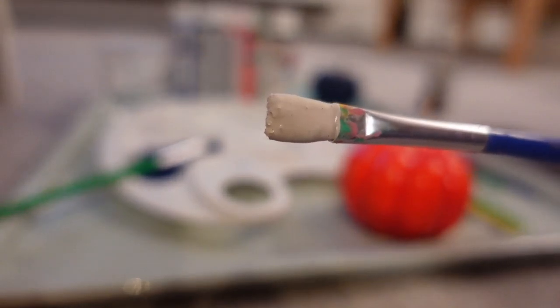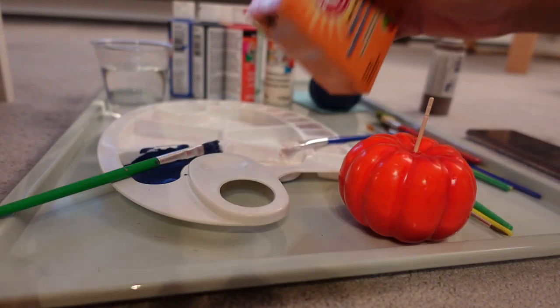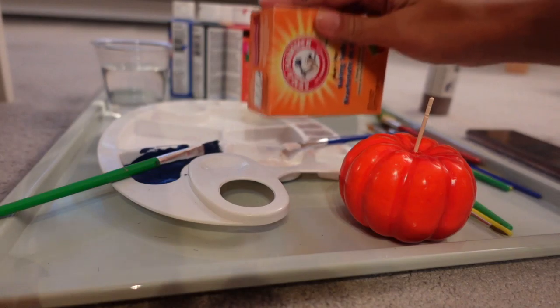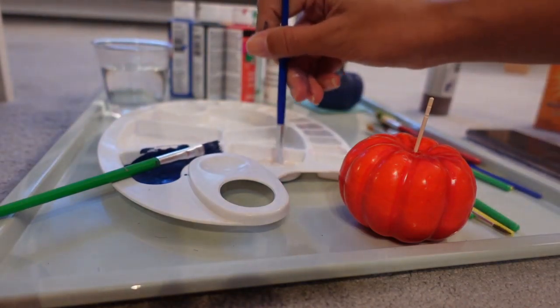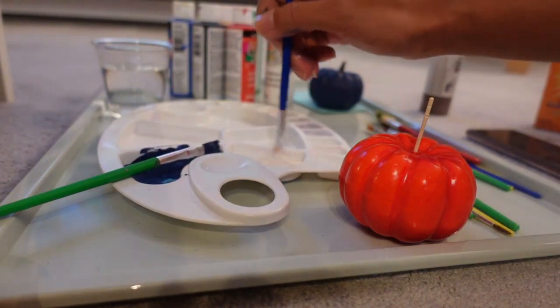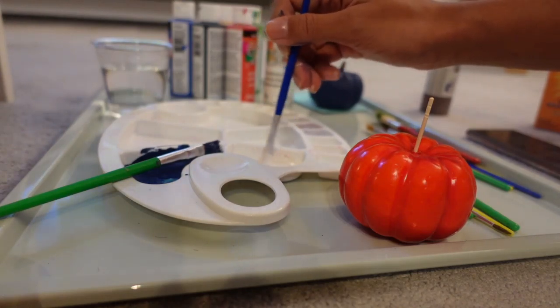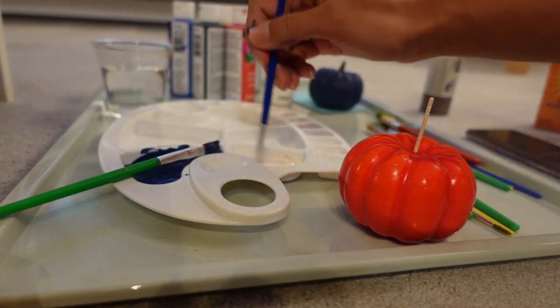We're going to repeat the same steps and add the baking soda in again and then mix it all in very well. You want to make sure you really mix the baking soda in, otherwise your pumpkin or whatever you're painting is going to look really gritty and you don't want that.